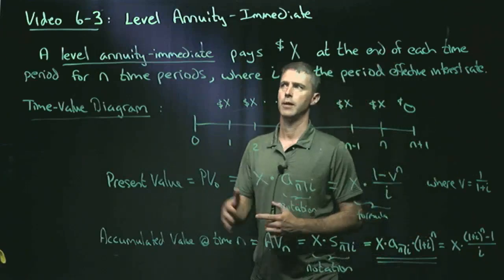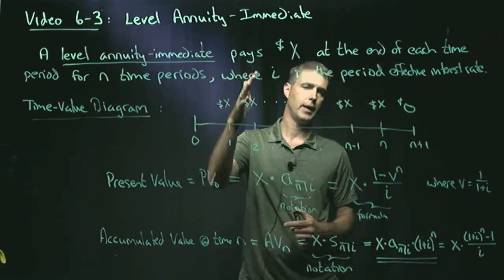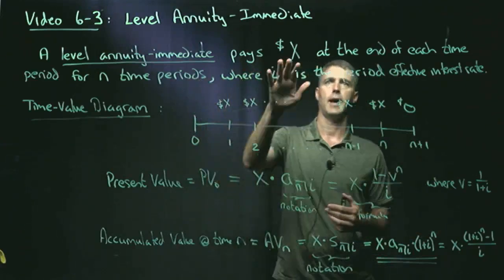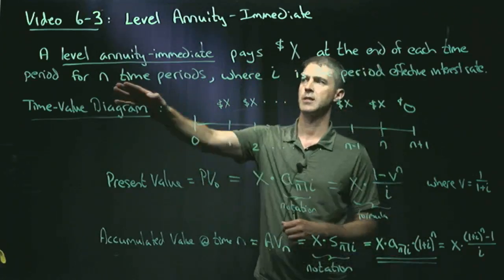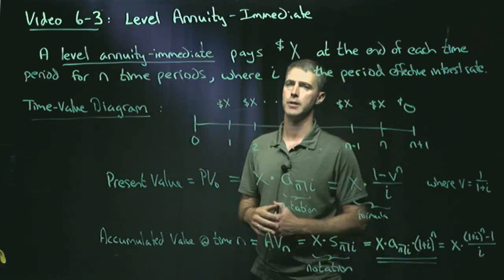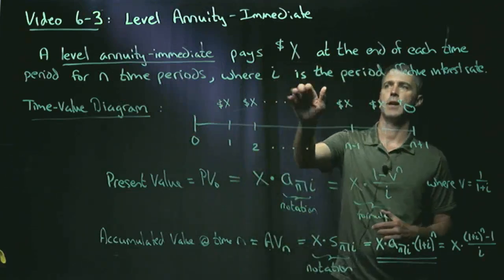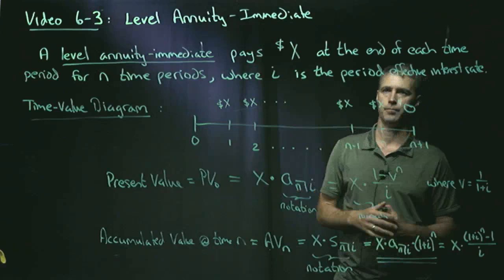So the general setup for a level annuity immediate is that it pays, or you're paying, X dollars at the end of each time period for a specified number N time periods, where we have a period effective interest rate I.